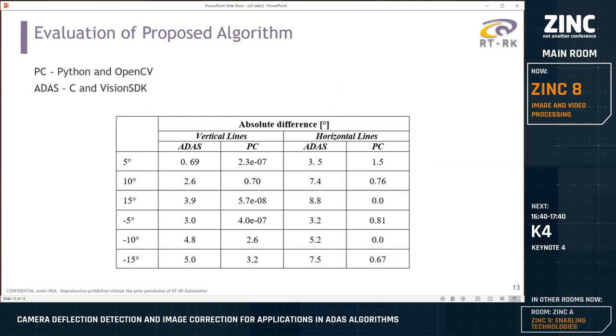I have done evaluation of the proposed algorithm. Evaluation was done on PC and on ADAS. On PC, I used Python programming language and OpenCV library, and on ADAS it was done with C and Vision SDK. What I basically did is I calculated the absolute difference between vertical and horizontal lines from the images and put them in a table. As you can see, for small deflections I got so-so results, not great, not terrible, but very good results. And for bigger deflections, I got very huge differences. For example, for 15 degrees, I got 5 degrees difference, which is not very good.